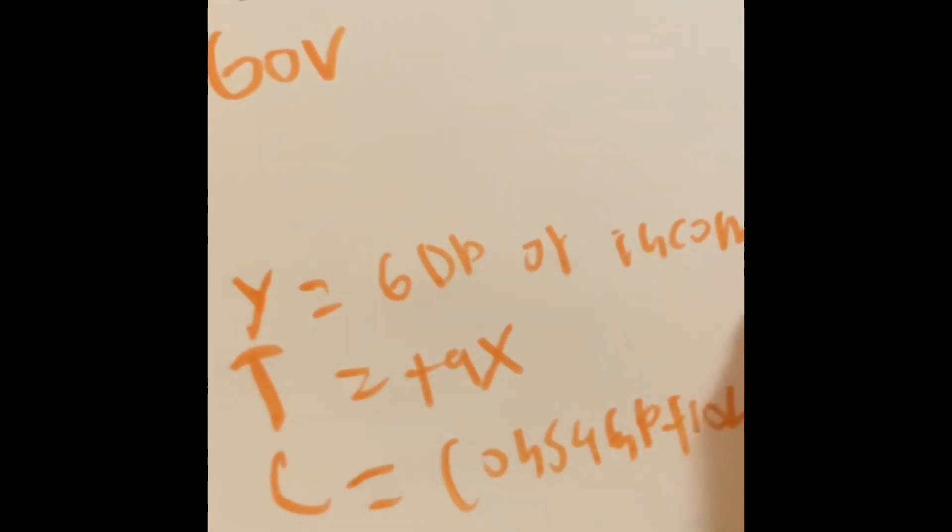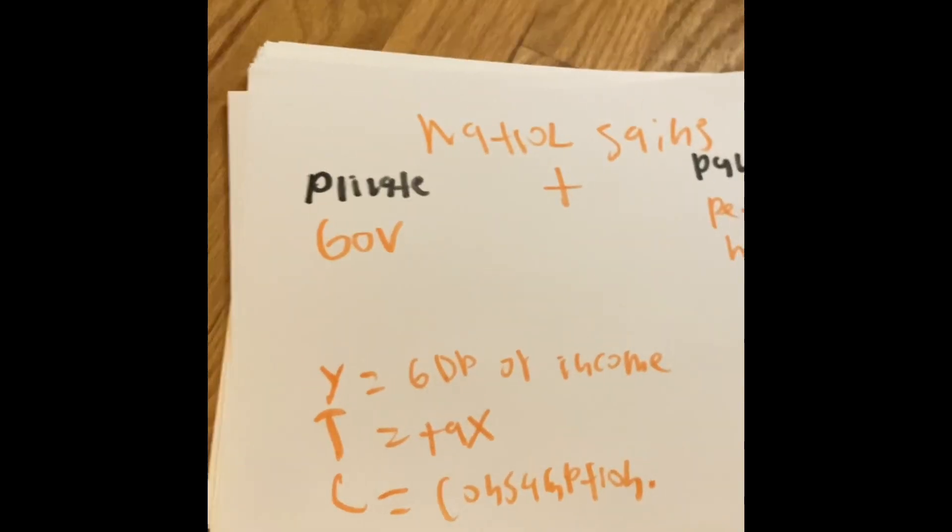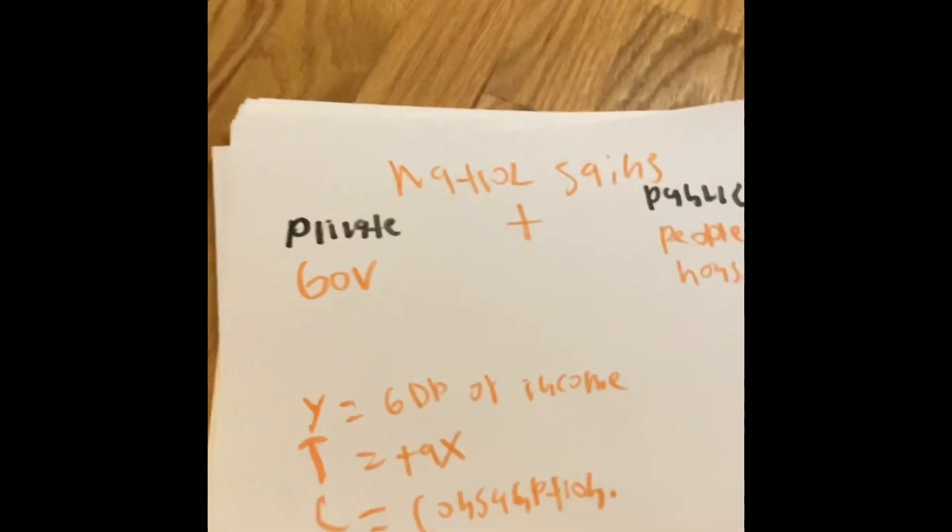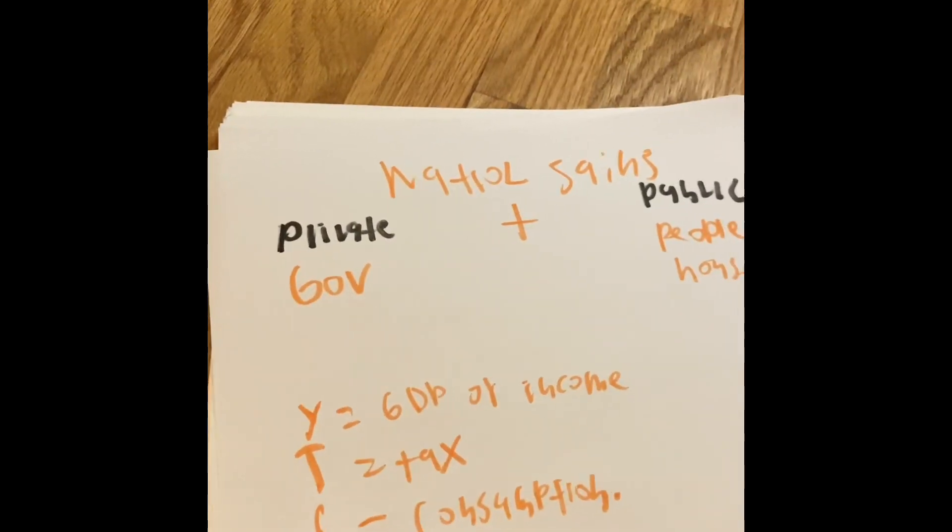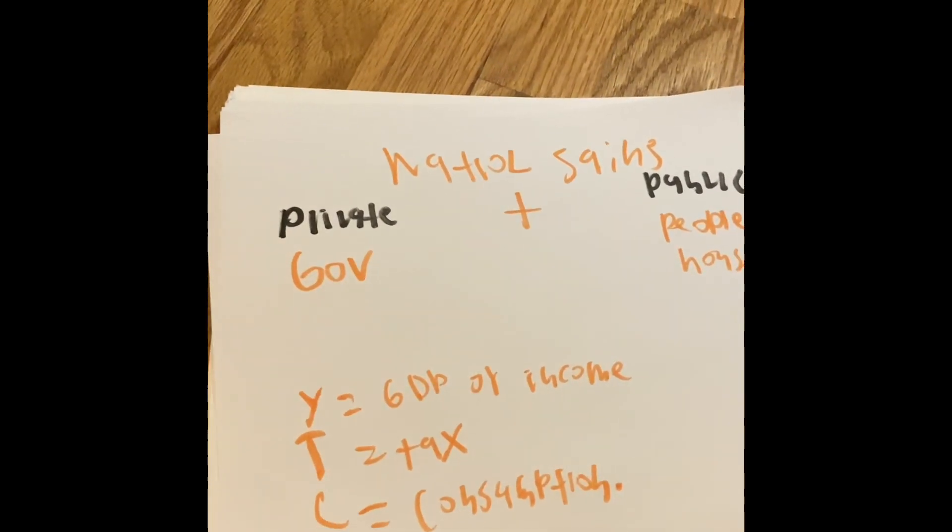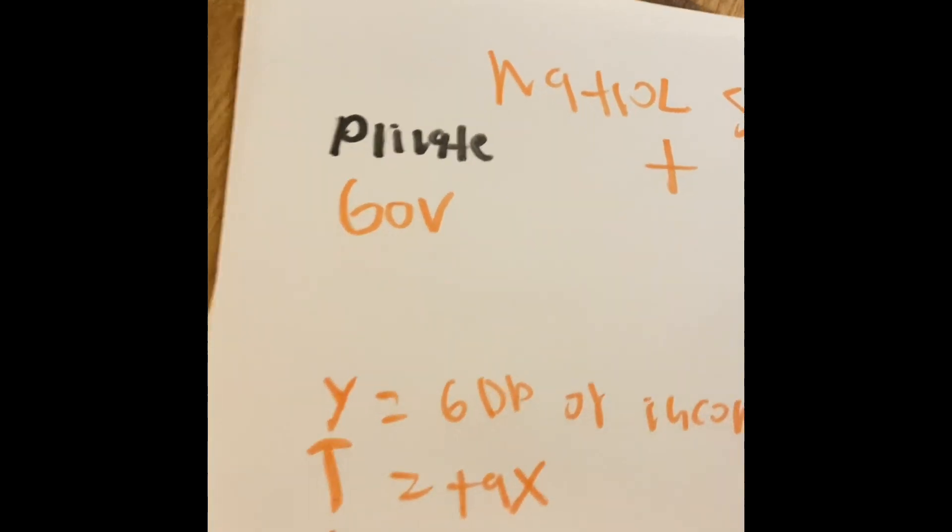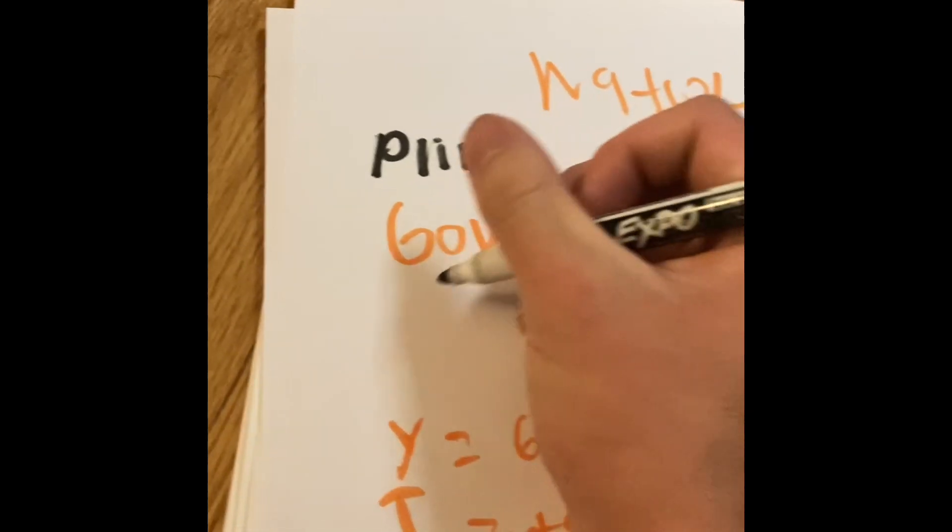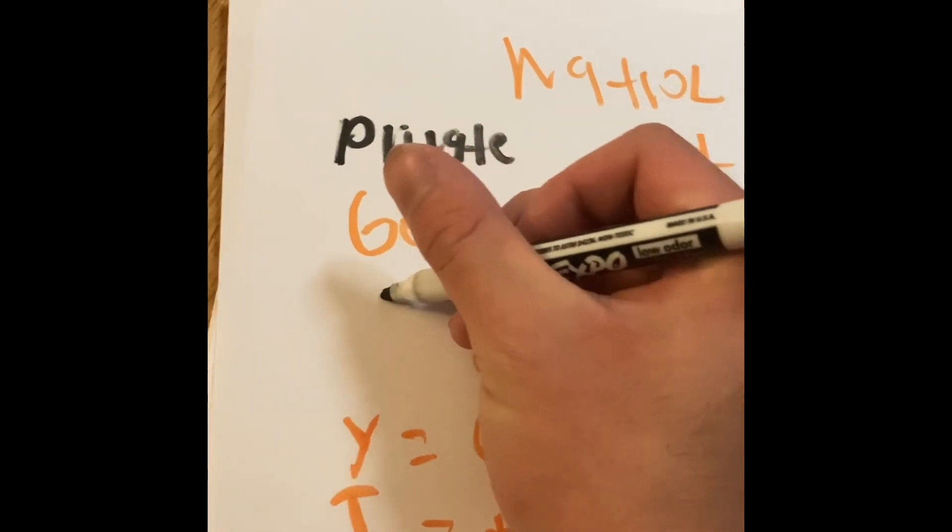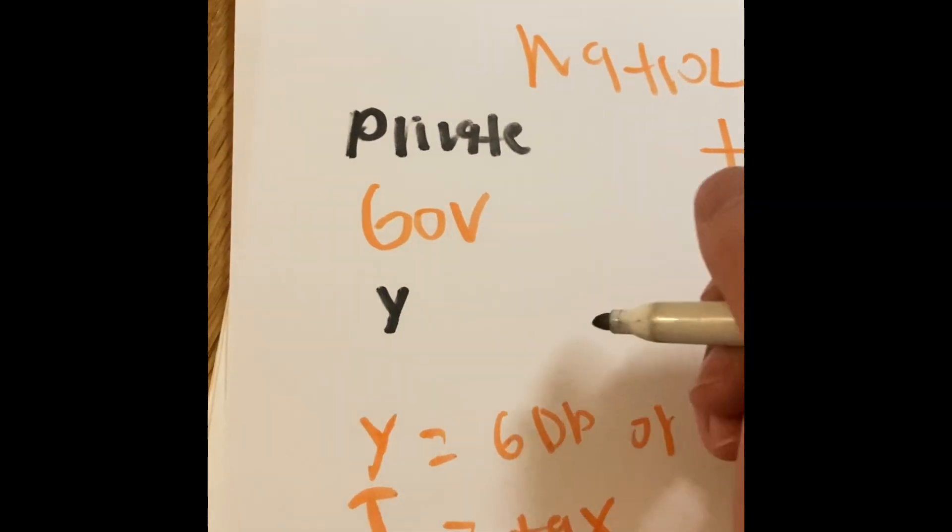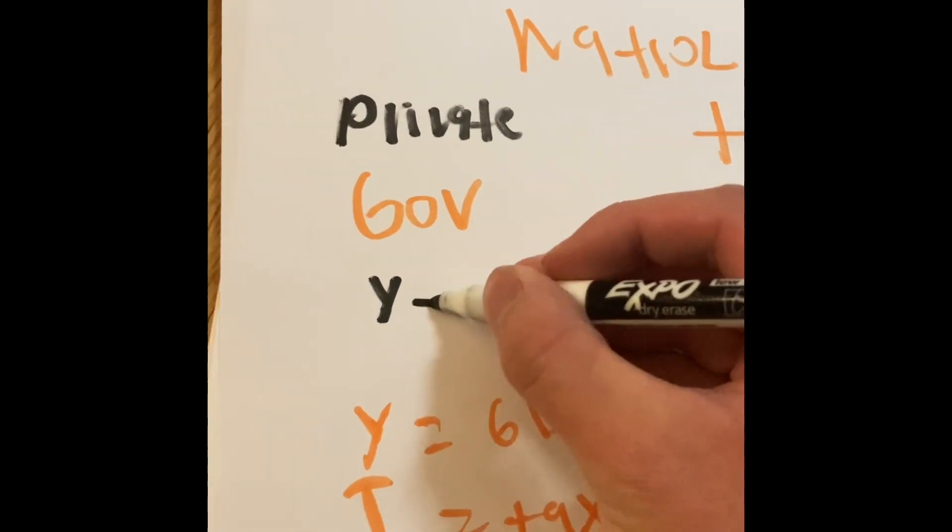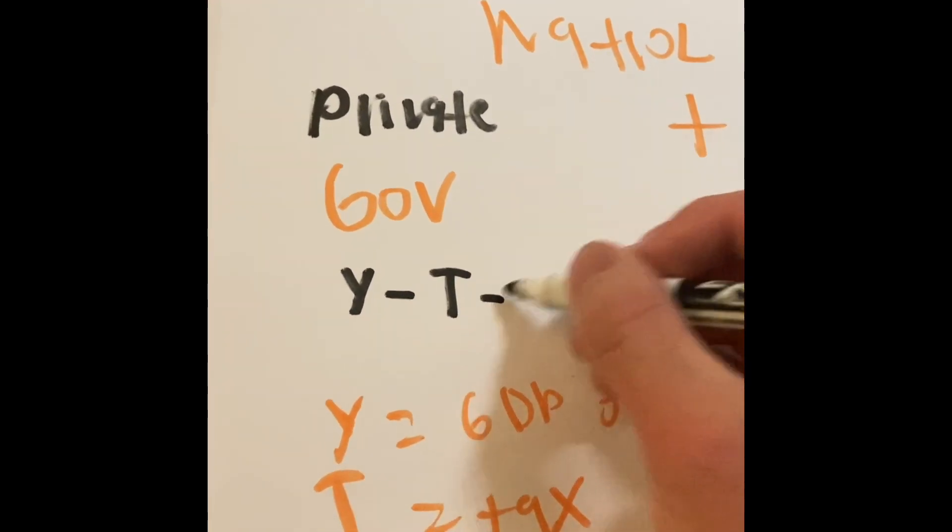Sometimes we have to eat things to survive, like tomatoes and pizzas and blah, blah, blah. So here's the formula for the private savings, usually for the government. So the formula is going to be the GDP or income, or Y, subtract that by T, subtract that by C.